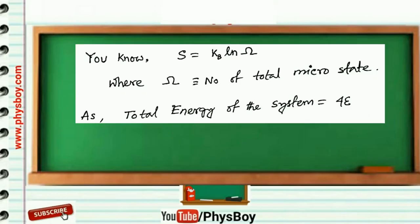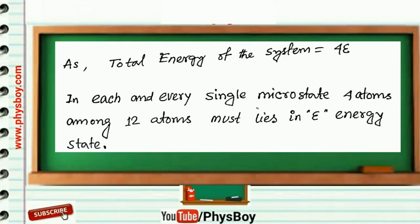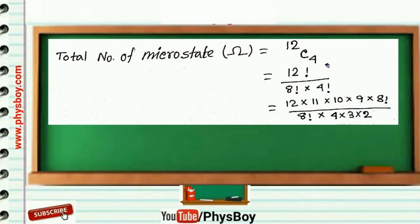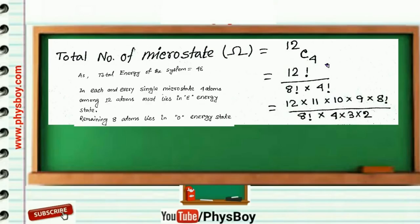As the total energy of this system is 4 epsilon, in each and every single microstate, four atoms among 12 atoms must lie in epsilon energy level, and the remaining 8 atoms lie in 0 energy state. Total number of microstates omega is equal to 12C4, and if you calculate 12C4, you will get 495.